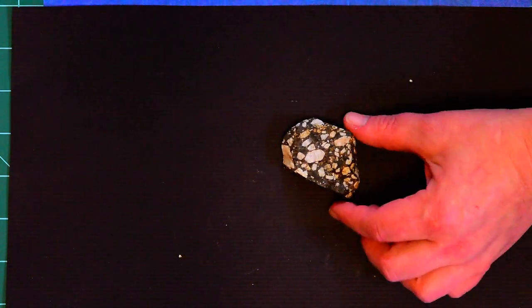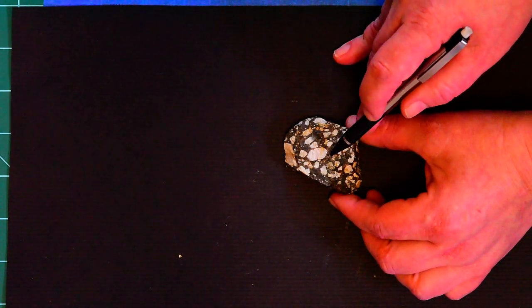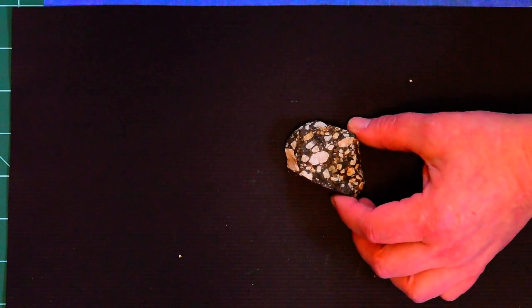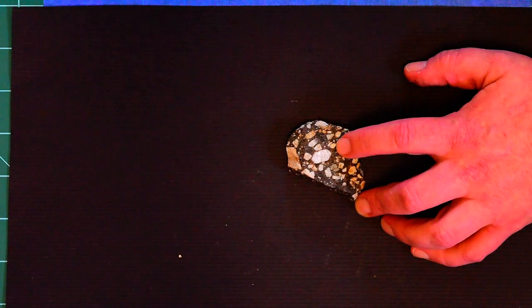Then we have things like porphyritic, where we have these larger crystals surrounded by smaller crystals. This is an extrusive porphyritic rock because the small crystals are hard to see.